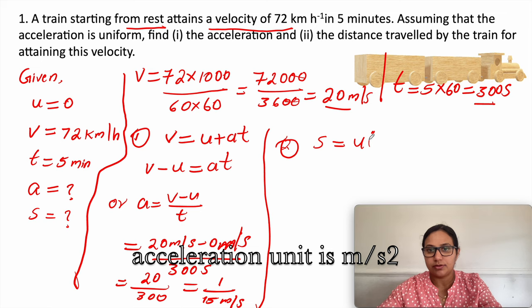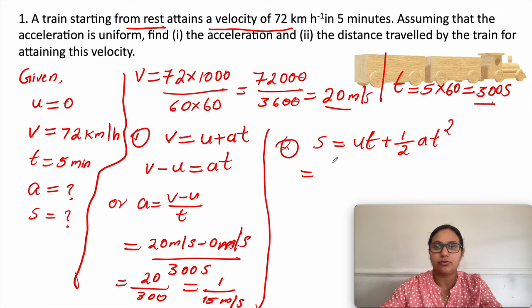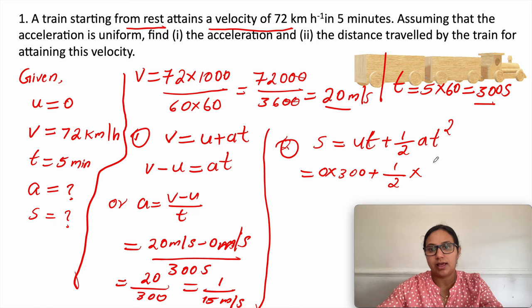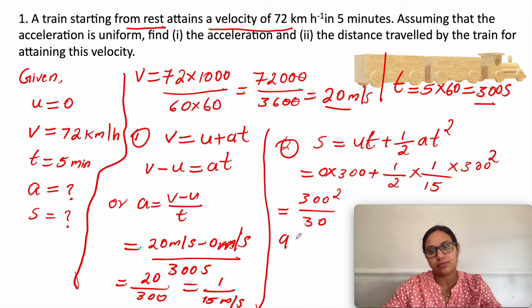Using s = ut + ½at², with u = 0: 0 times 300 plus half times (1/15) times 300 squared. That gives 300 squared divided by 30, which simplifies to 3000 meters, or s equals 3 kilometers. That is the answer.